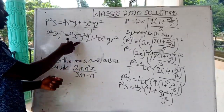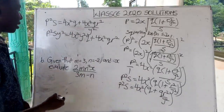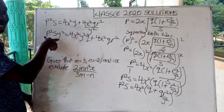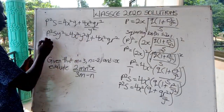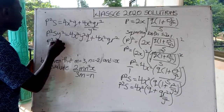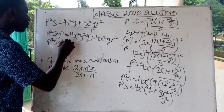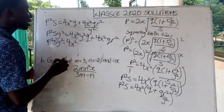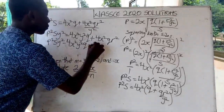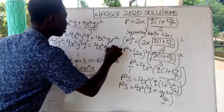Now we are going to take the terms with y squared to one side and the terms without y to the other side. So we are going to transpose 4s squared y squared Q to this side, giving us P squared s y squared minus 4s squared y squared Q is equal to 4s squared Q r squared.